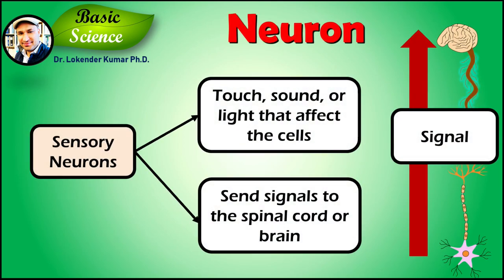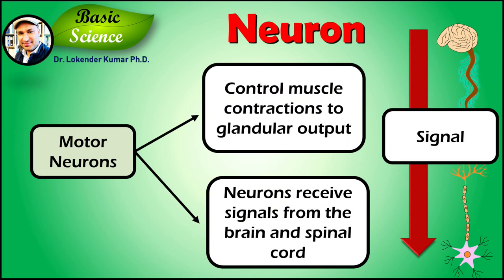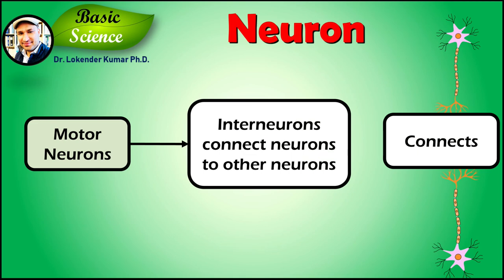Sensory neurons respond to stimuli such as touch, sound or light that affect the cells of the sensory organs, and they send signals to the spinal cord or the brain. Motor neurons receive signals from the brain and spinal cord to control everything from muscle contraction to glandular output.